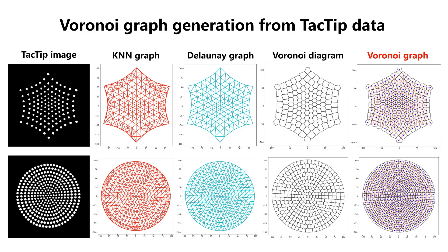First, we transformed the image data from the TAC-TIP into a graph structure. The pins on the TAC-TIP's gel are regarded as vertices. Their localization and the relative distances between pins will vary with the skin deformation. Delaunay triangulation is used to support the graph edge construction, which performs beyond the k-nearest neighbor algorithm.